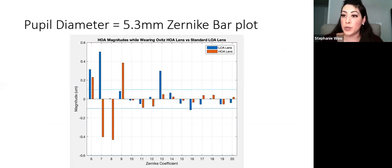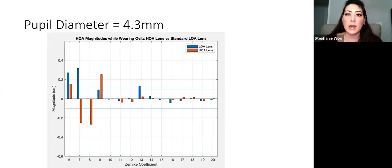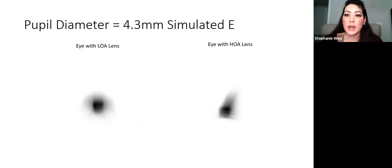Now with the pupil even smaller. This is another simulated graph showing at 5.3 millimeters what the bar plot is looking like, and then this is the simulated E again. The LOA lens still looks kind of like a blob. HOA lens, you can definitely see those three little legs. And then finally, with a 4.3 millimeter pupil, as the pupil gets smaller, some of these higher order aberrations decrease or diminish or their effects aren't as noticeable. You can see that even with the LOA and HOA lens, things have come into focus a little bit more.